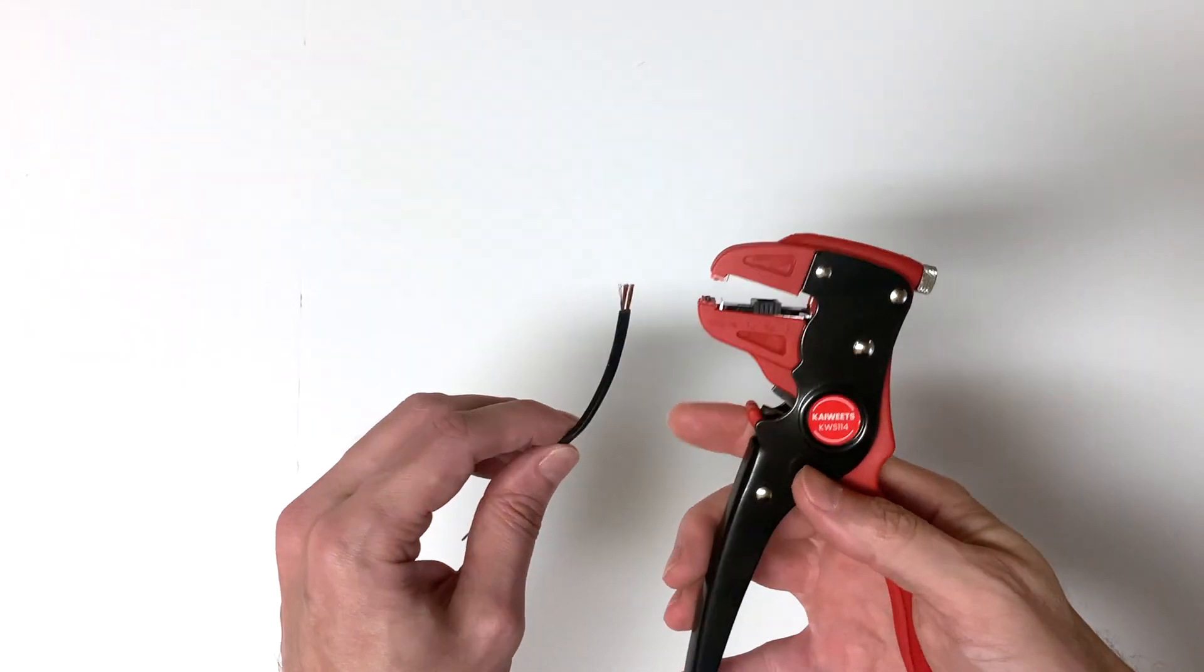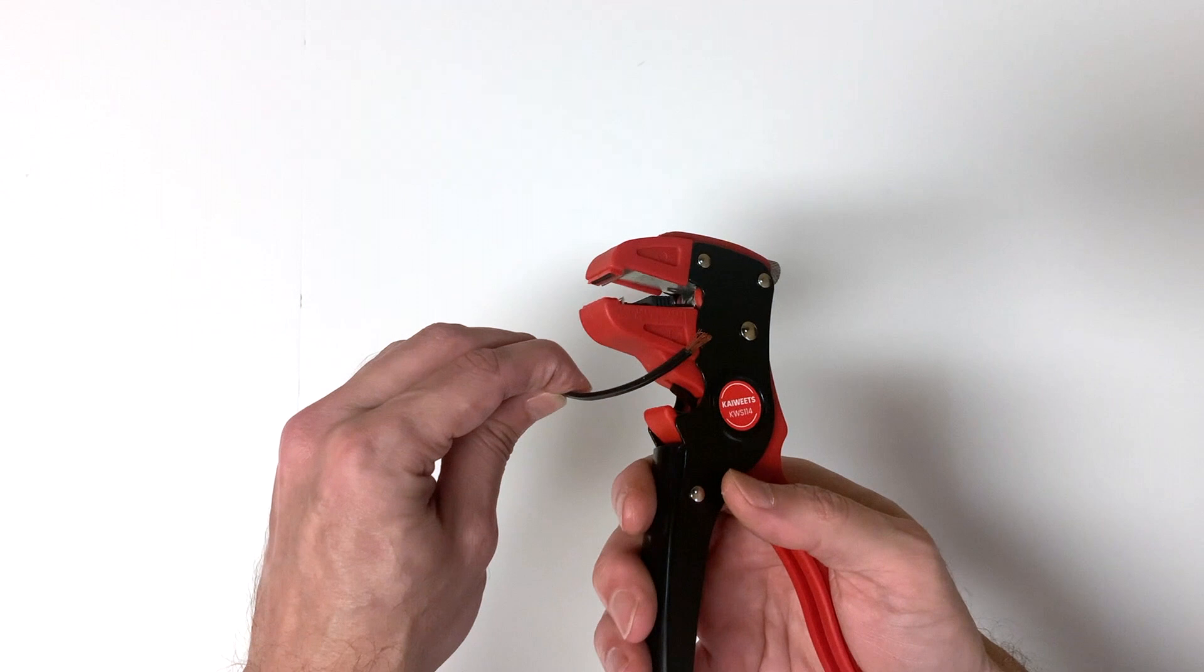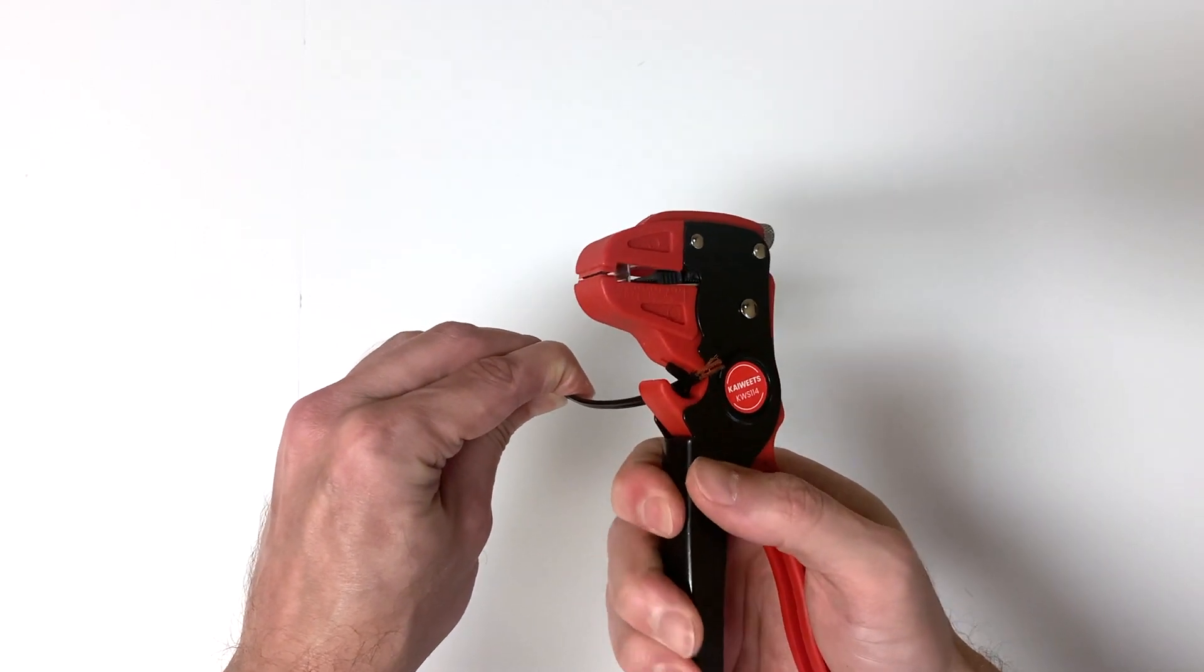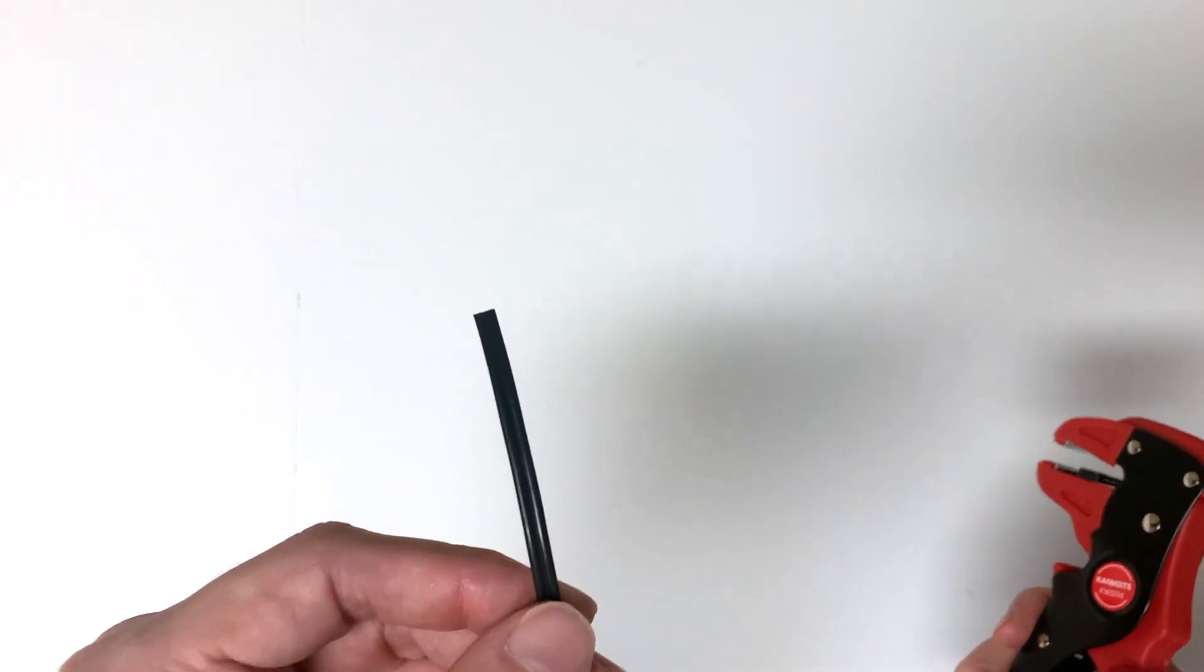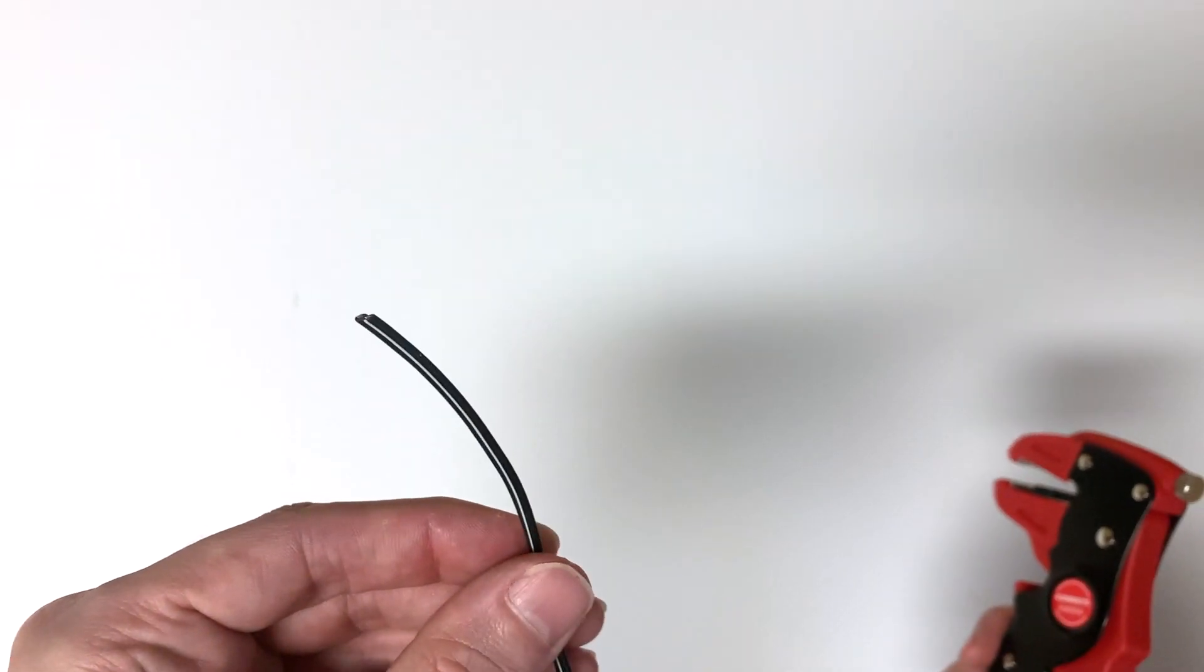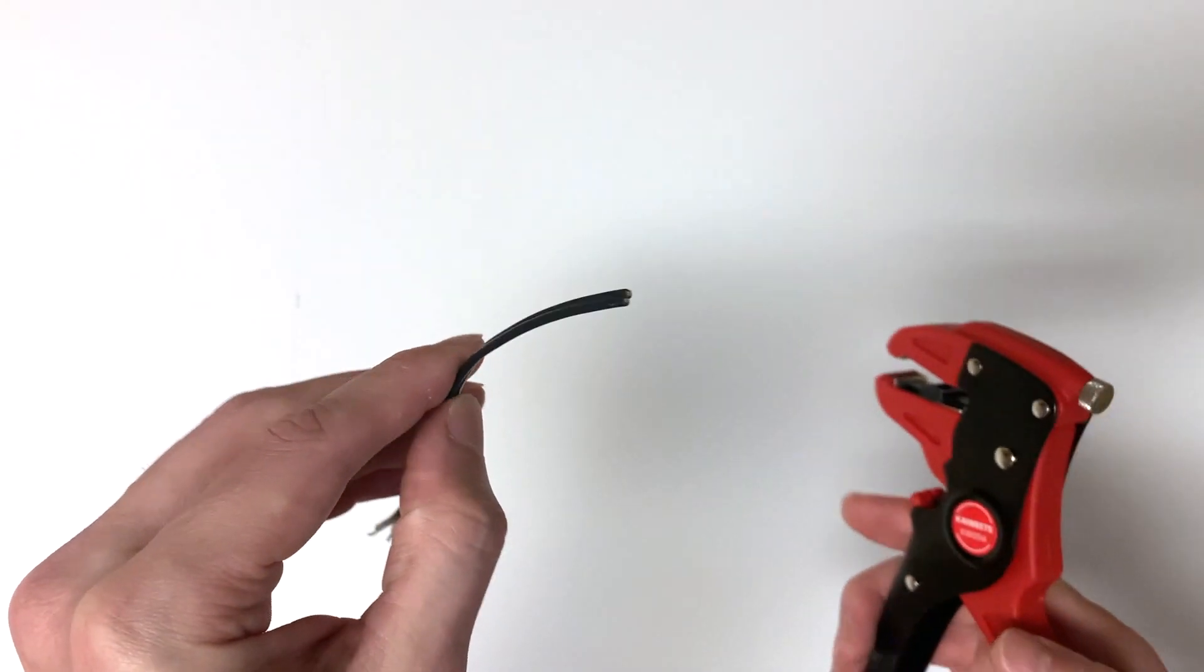Okay so let me show you real quick how the wire cutting tool works. Just place your wire here where you want to make the cut and then just do a quick squeeze and it cuts the wire for you. As you can see it's a nice clean cut and now you're ready to use the wire stripping mechanism.